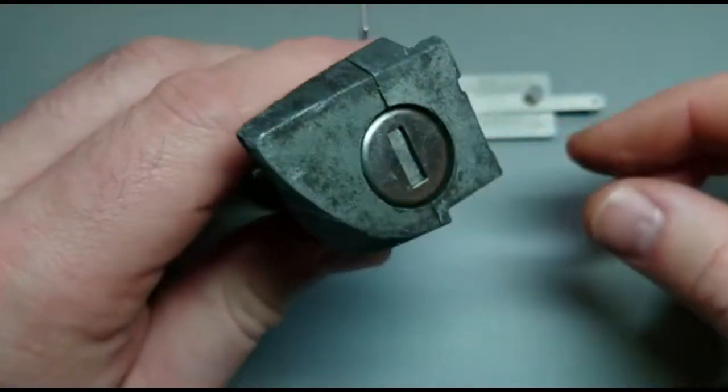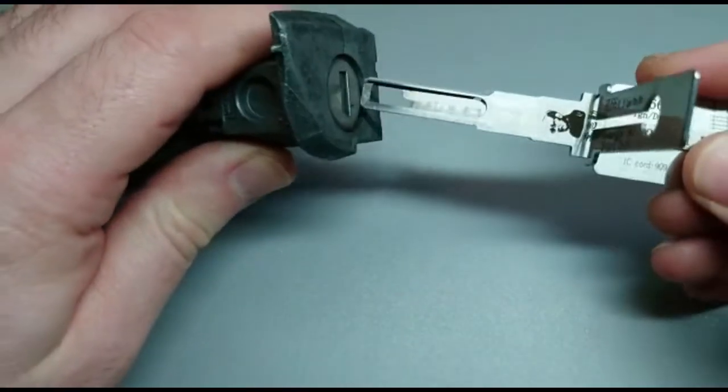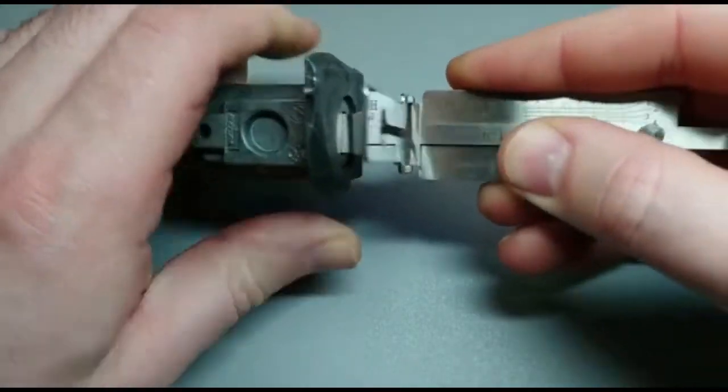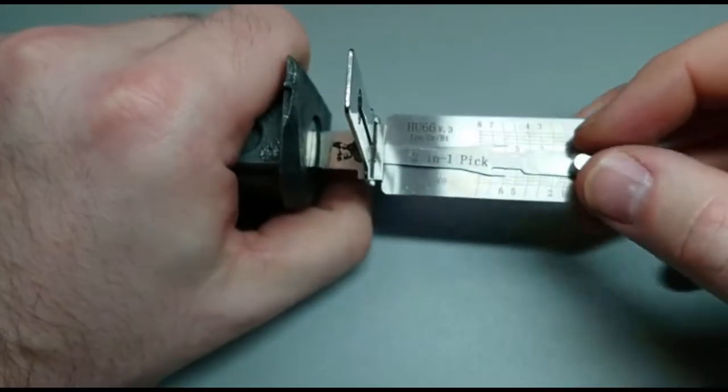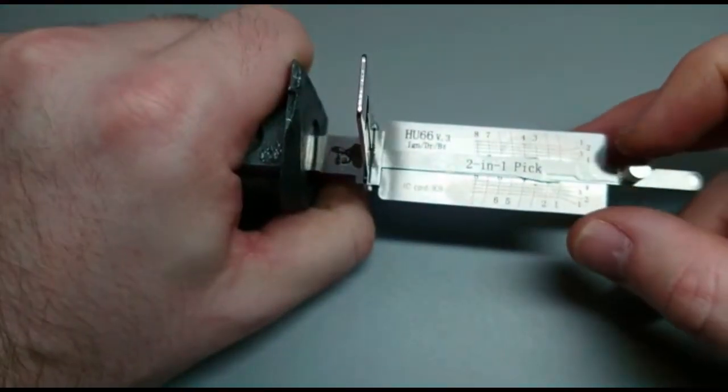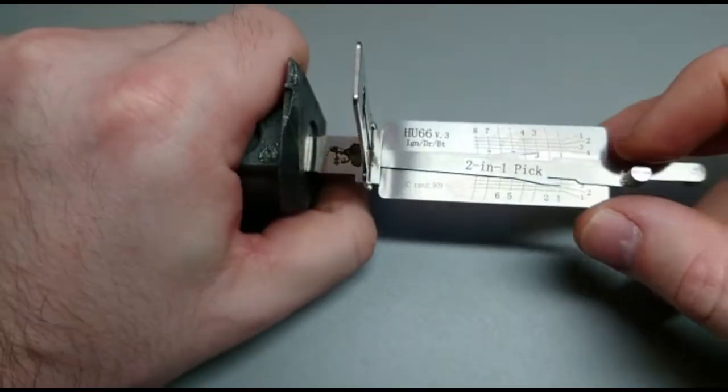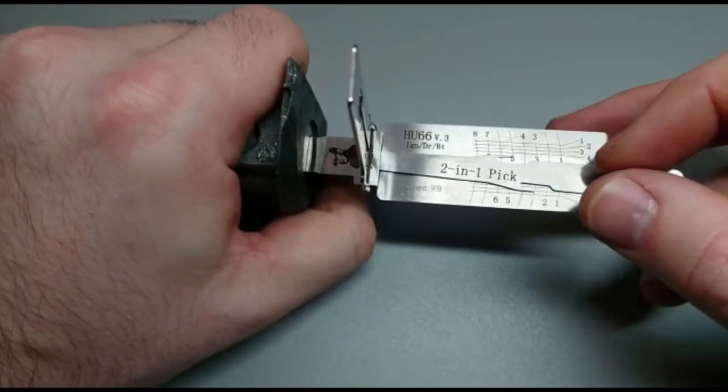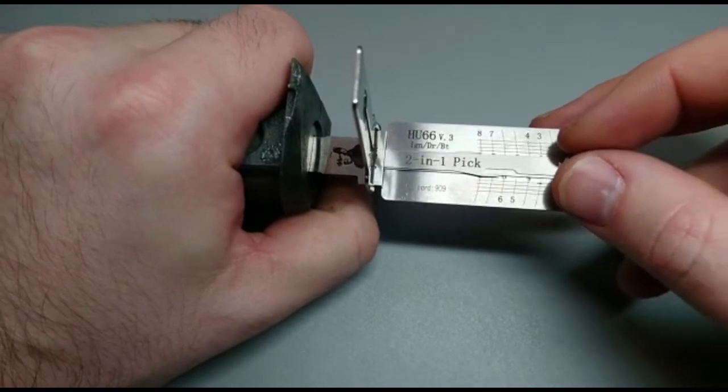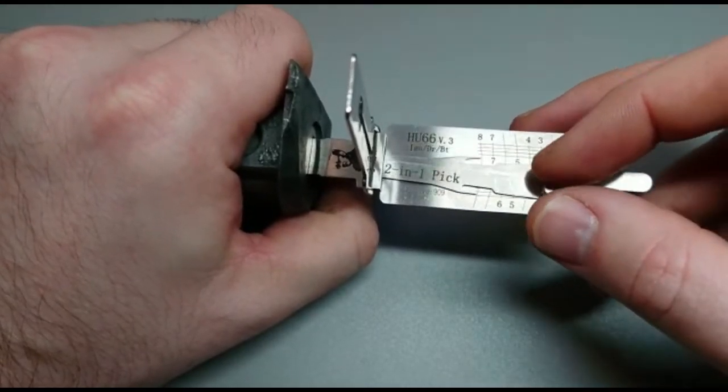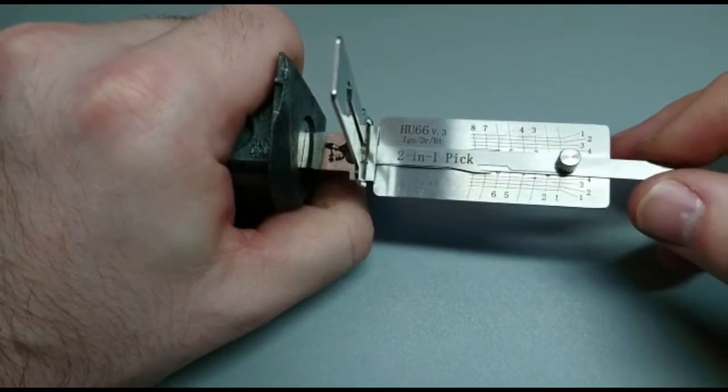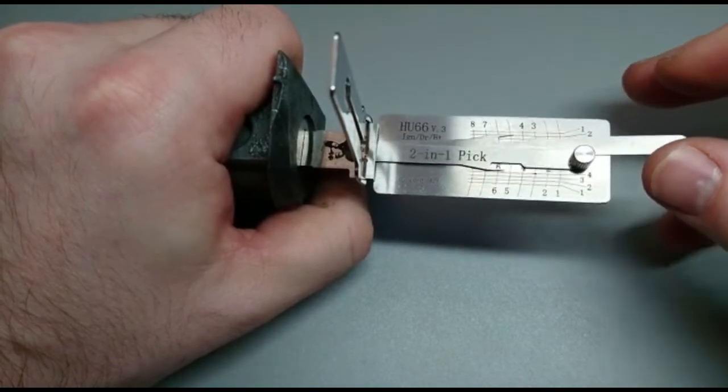Welcome to Lock Picking Legend and we are looking at another legend today, the Lishi Pick. This is an HU66 lock. These are used on Volkswagen, Audi, Seat, Porsche, some Skodas and as you'll see the Lishi Pick will plough through this lock in about a minute.